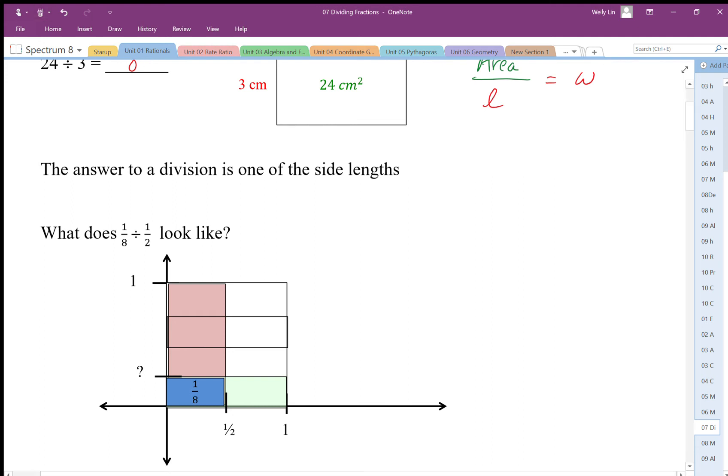That's my area—you can see that's my area, ⅛, divided by a side length of ½. So there's my side length of ½, and the answer should be the other length, or the width.